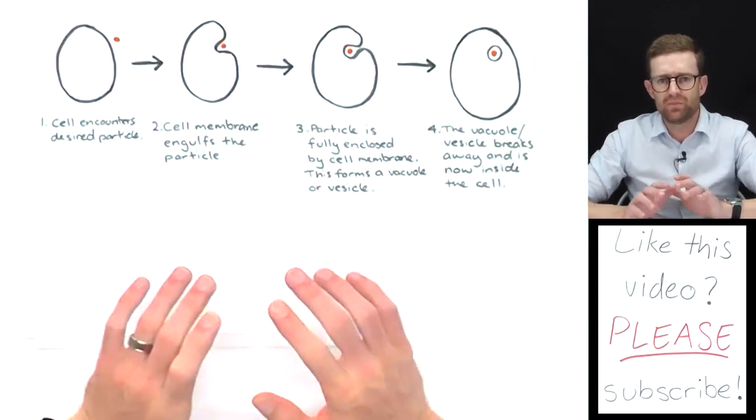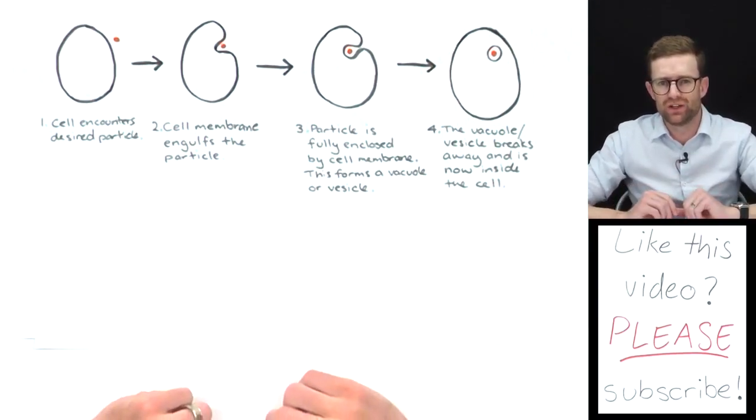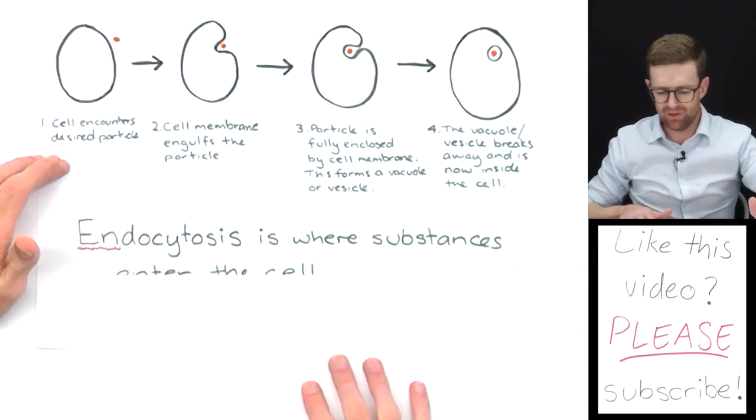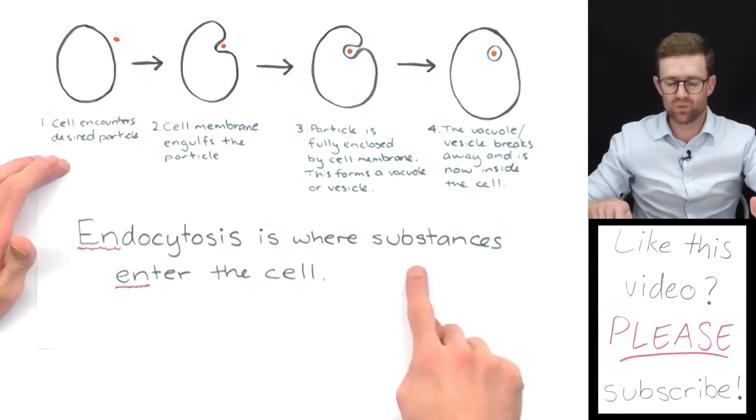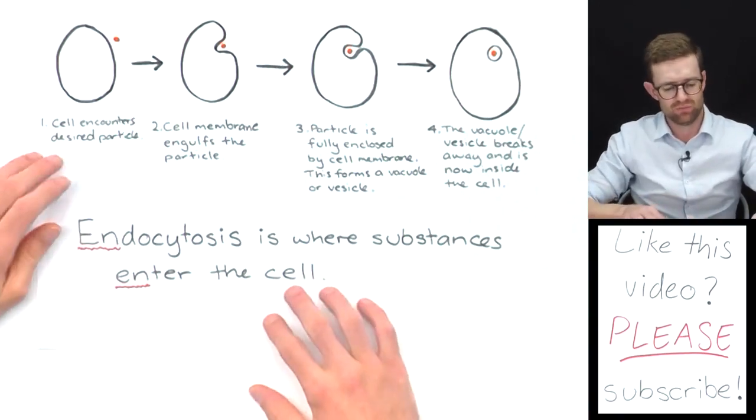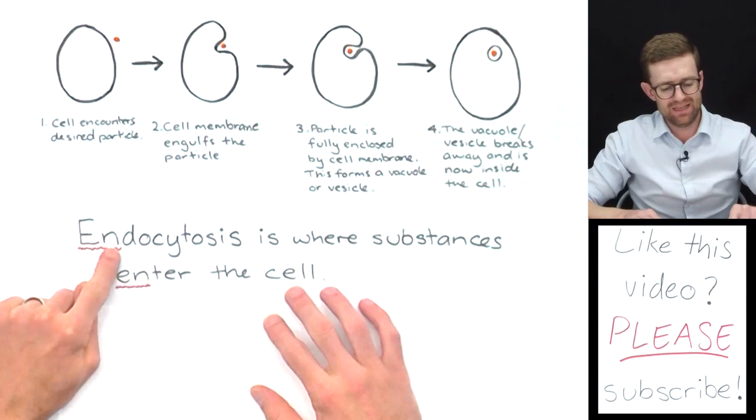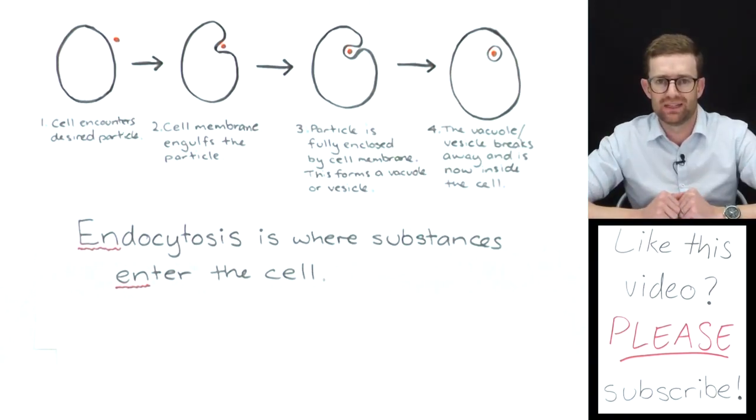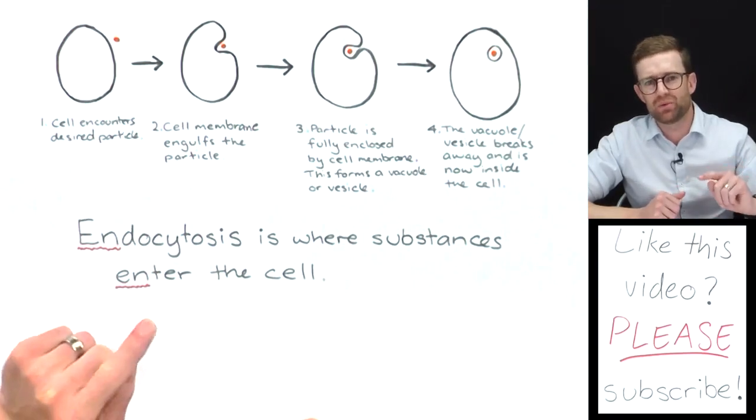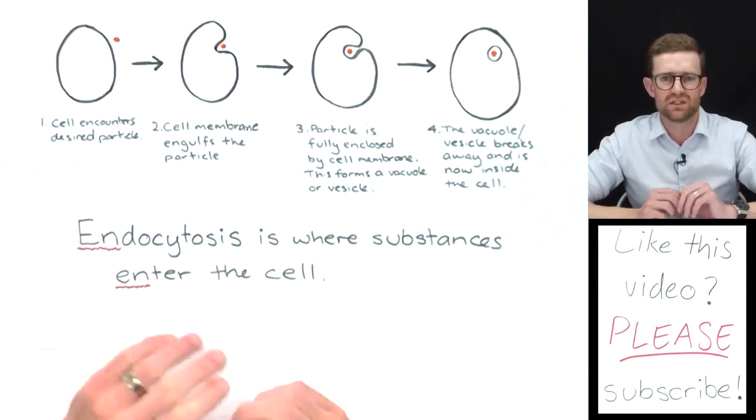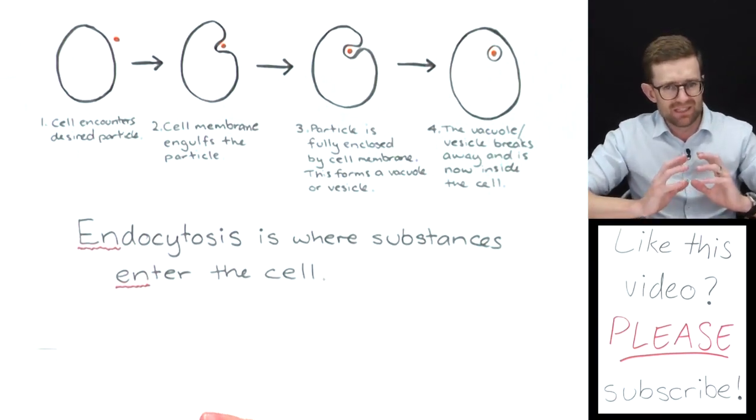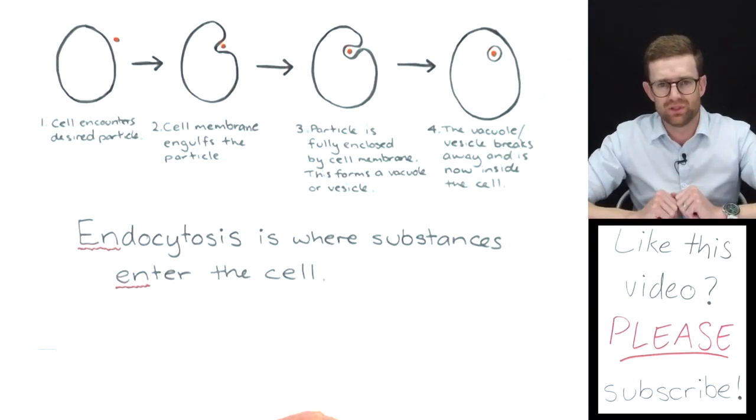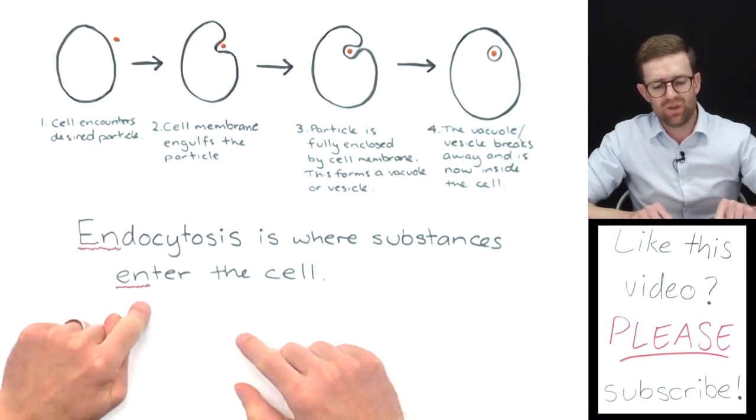Now a useful thing to remember with understanding what endocytosis is and how to describe what's happening here is just in its name. Endocytosis is where substances enter the cell, and I've underlined here EN-endo-EN-enter. It's my simple way of remembering that that's what endocytosis is. Because remember there's the other process, exocytosis—it's in a separate video. That's how substances exit the cell, and it's essentially the opposite of endocytosis. But endo is for entering.